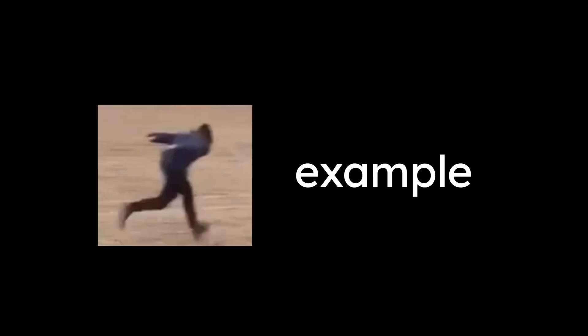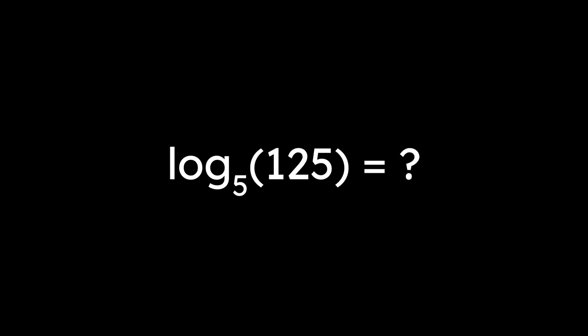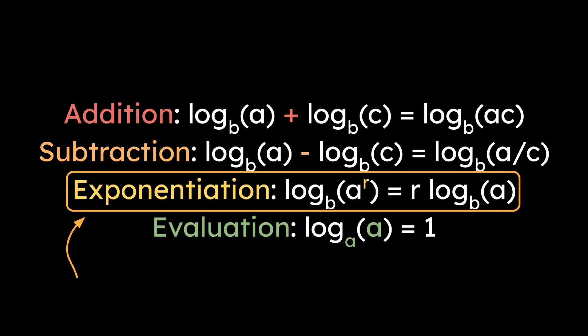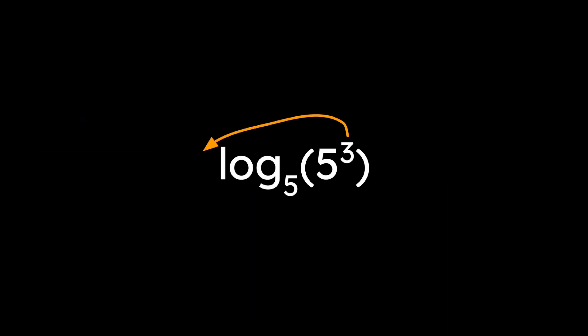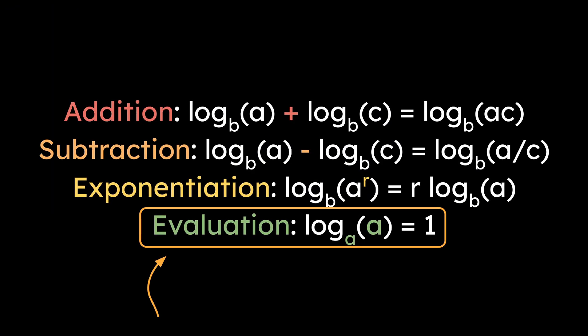Let's do a quick example. To find log base 5 of 125, notice that 125 can be expressed as 5 cubed. From this property here, we can take out the exponent. Then from this property, we can turn this expression into 1, giving us 3.